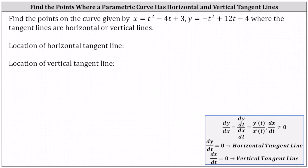Referring to our notes below, wherever dy/dt equals 0 we have a horizontal tangent line, and wherever dx/dt equals 0 we have a vertical tangent line. Recall dy/dt measures the change of y with respect to t. Whenever the change of y with respect to t is 0 we have a horizontal tangent line, and wherever the change of x with respect to t equals 0 we have a vertical tangent line.